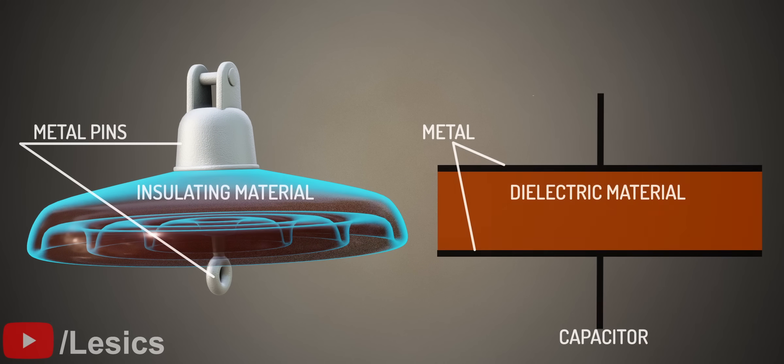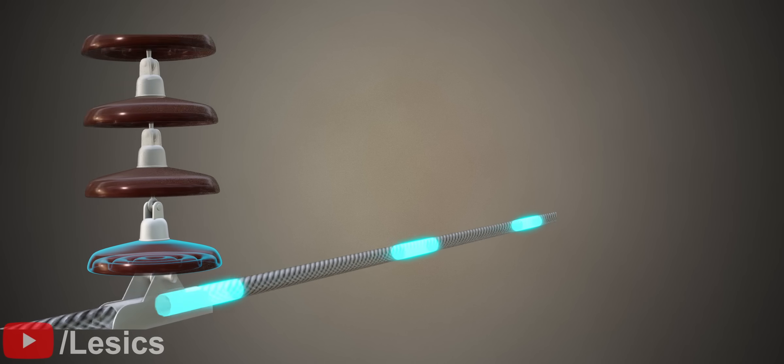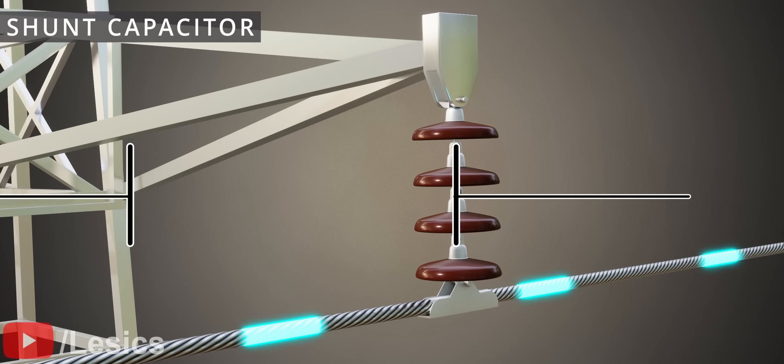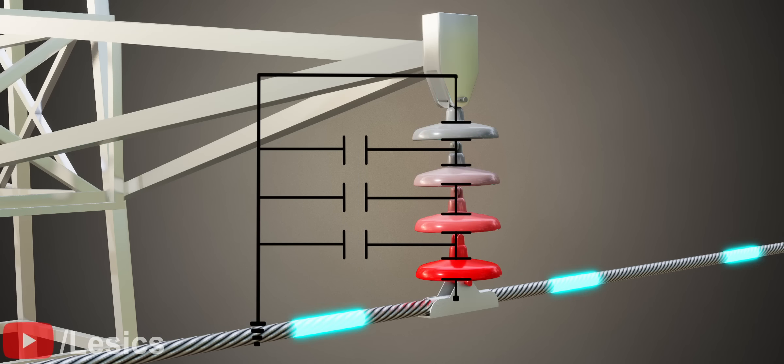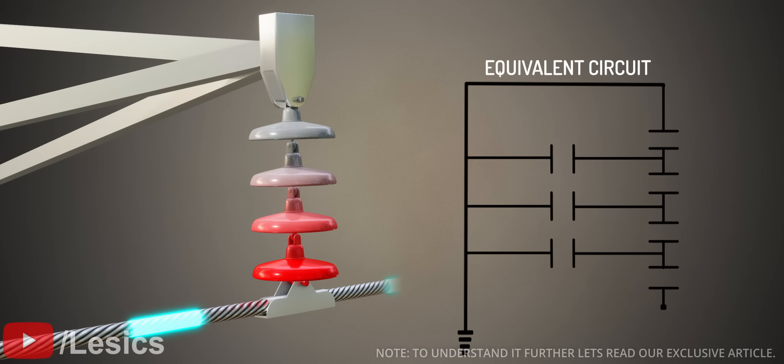Let's see how this unequal voltage occurs and how we can avoid this. Here, you can observe two metallic pins of the insulator acting as capacitor plates with a dielectric between them. Similarly, there is one more type of capacitor that forms between the tower and metallic pins, in which air acts as a dielectric. The unequal voltage distribution is caused by this capacitance effect.